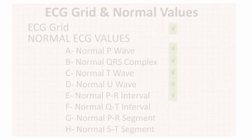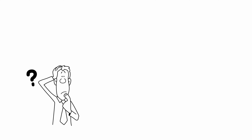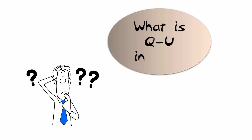So we have finished the ECG grid, the normal P wave, QRS complex, T wave, normal PR interval, and QT interval values, and we will continue talking about normal ECG values in the next videos. Now let's jump to the question of this day: What is the QU interval?